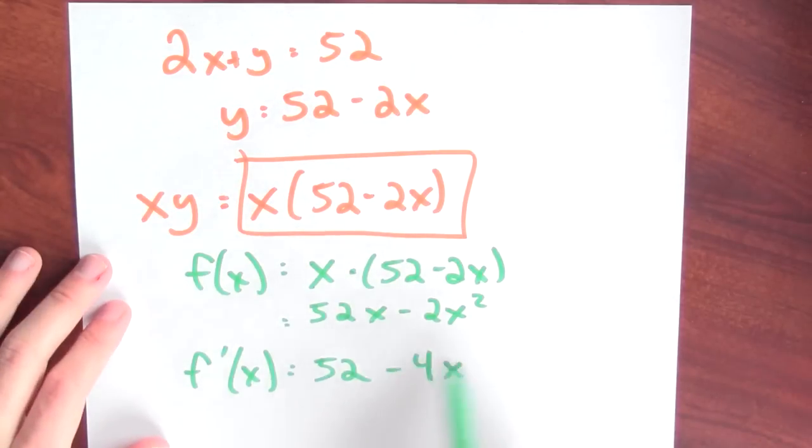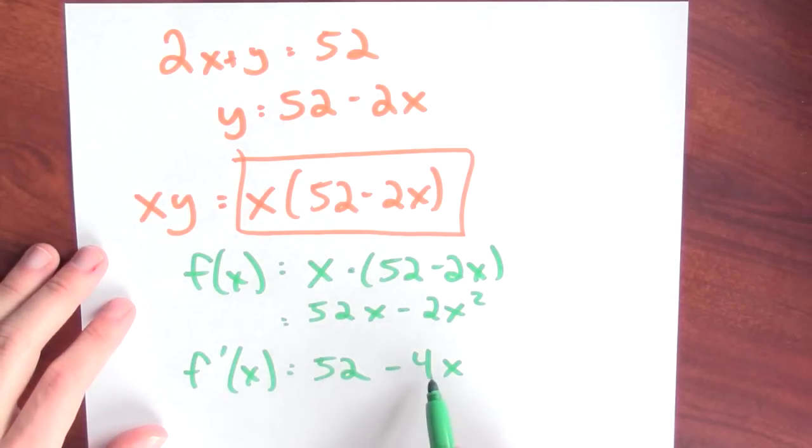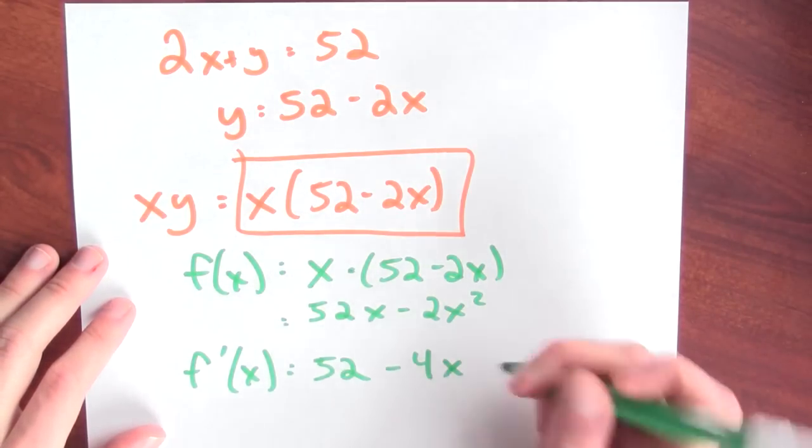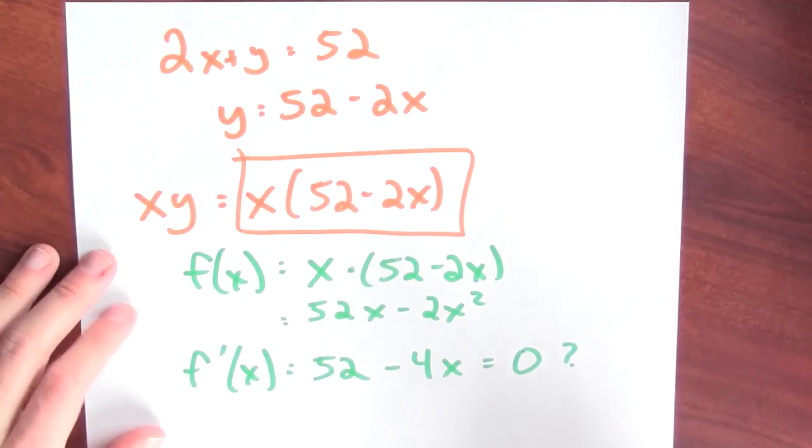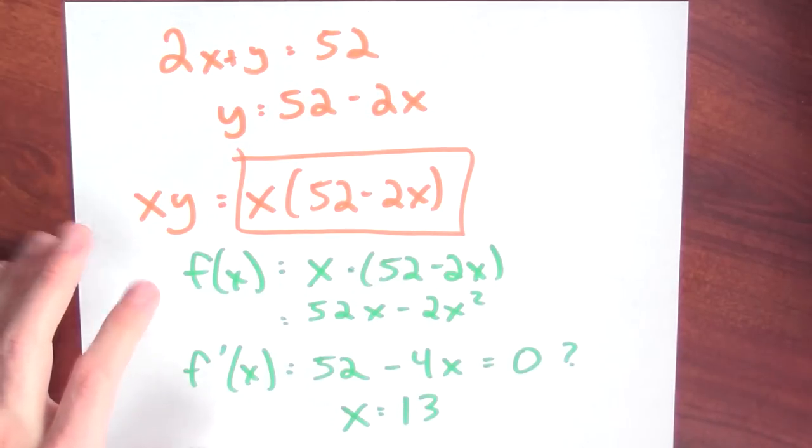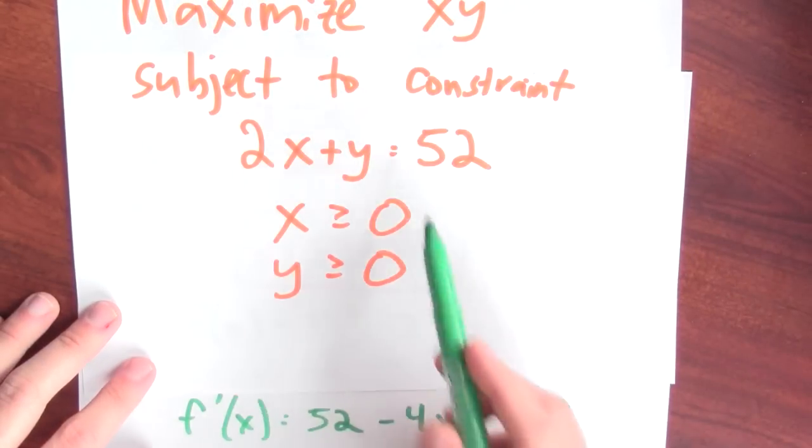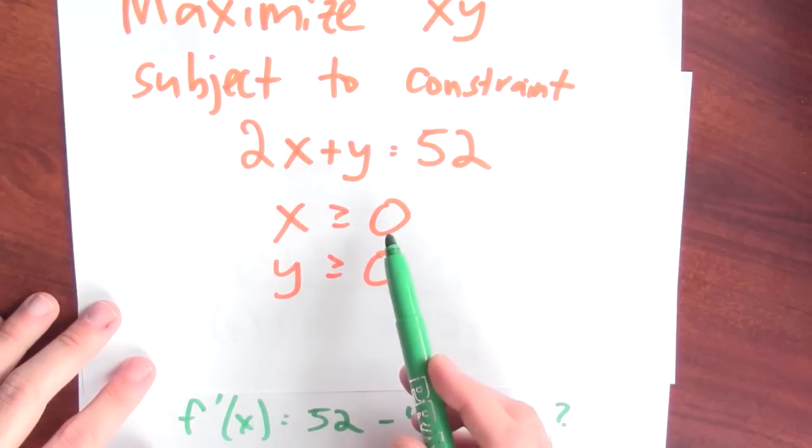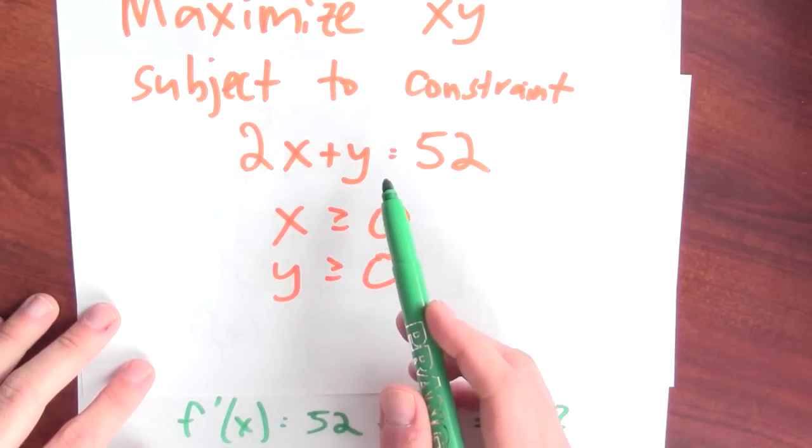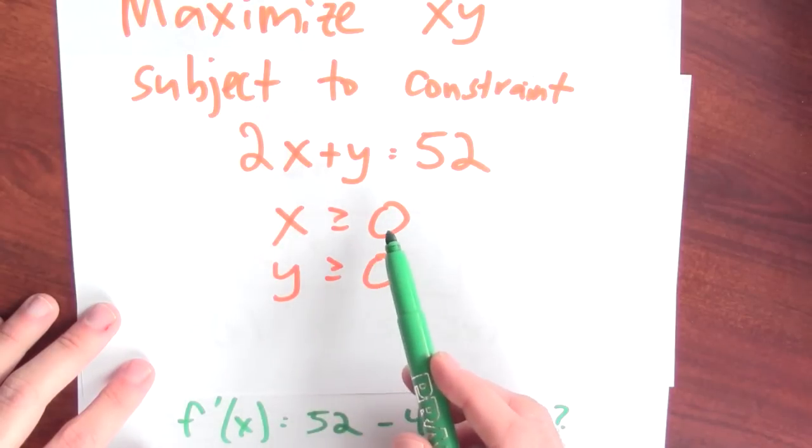And the critical points are places where the function's derivative vanishes or the function's not differentiable. This function's a polynomial so it's differentiable everywhere. The only thing I have to worry about then for critical points is when this derivative is equal to 0. So for what values of x is that equal to 0? Well, the only place where this derivative is equal to 0 is when x equals 13. I should also remember that I'm maximizing this function subject to this constraint. And there were also some domain issues. I don't want x to be negative. And in order to ensure that y is non-negative, if 2x plus y is 52, then x can't be negative but x also can't be bigger than 26.